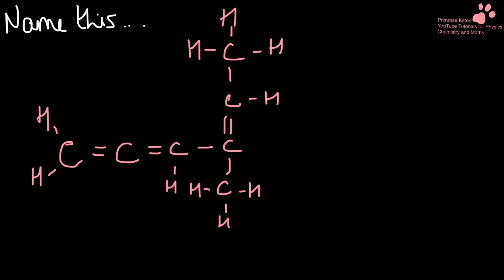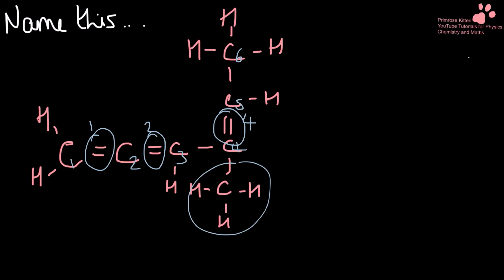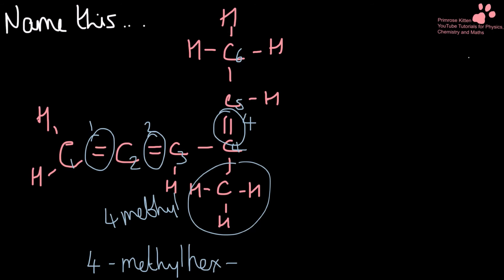Name this. So we have lots of functional groups here — one, two, three, four, five, six carbons in a row. We've got a double bond on one, a double bond on two, a double bond on four, and also a four-methyl functional group. So if we put that all together: 4-methylhexa-1,2,4-triene.